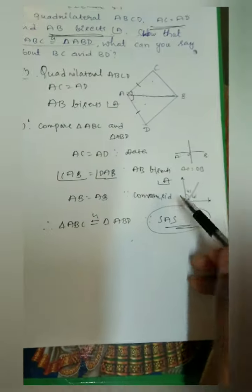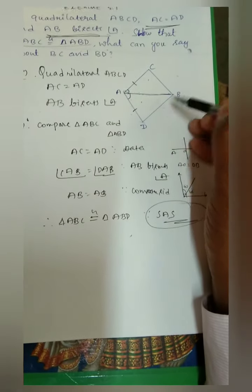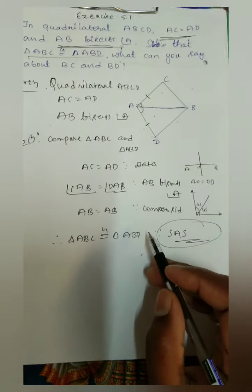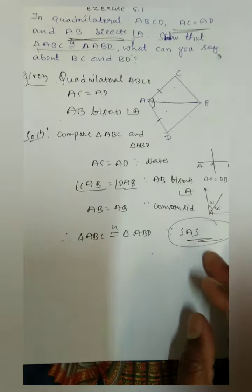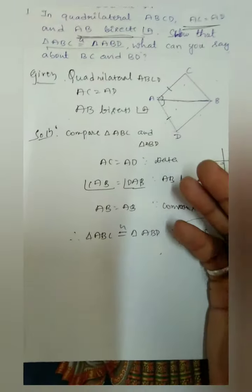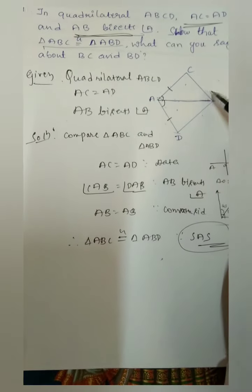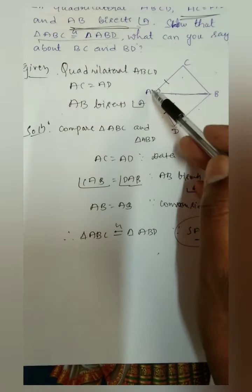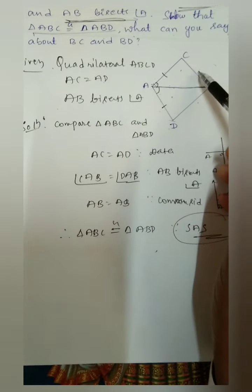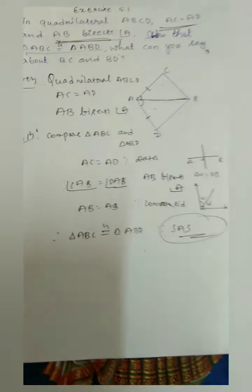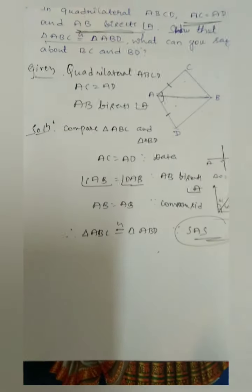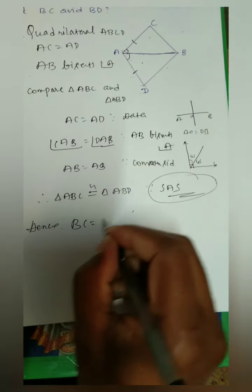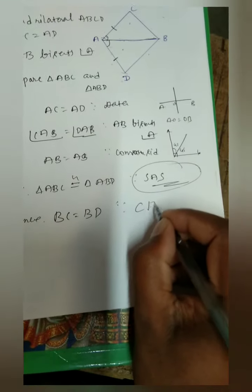What can we say about BC and BD? Since the two triangles are congruent, all corresponding parts are equal. So angle C equals angle D, angle BCA equals angle BDA, and side BC is equal to BD. Hence BC is equal to BD, because of corresponding parts of congruent triangles (CPCT).